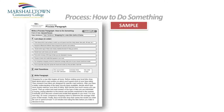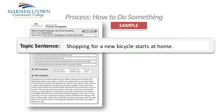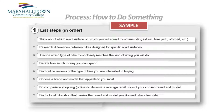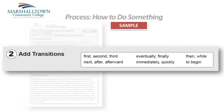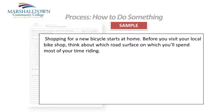Once you've decided on a good topic sentence, the next step is to make a numbered list of each step in your process. The worksheet I've provided here can help you do that. In my sample paragraph, you'll see that my topic sentence is: Shopping for a new bicycle starts at home. From here, I listed each step that readers should follow in researching and shopping for a bike, and I used transition words in my sentences to remind readers that I'm explaining a process. Before you visit your local bike shop, think about which road surface on which you'll spend most of your time riding. Notice the transition word before, which does a nice job of letting the reader know that I'm talking about a sequence of events.